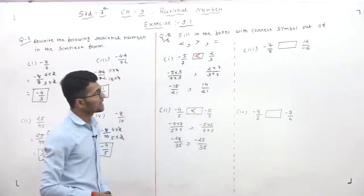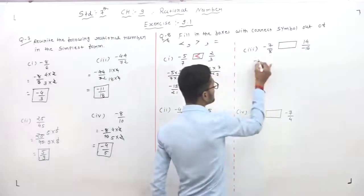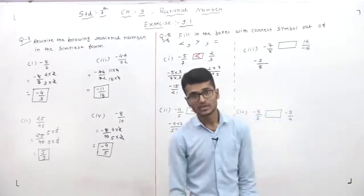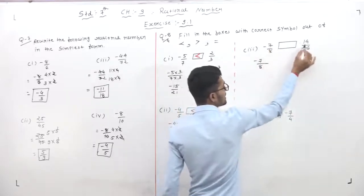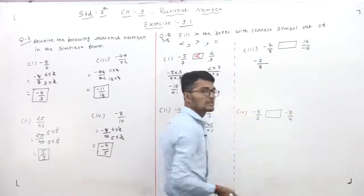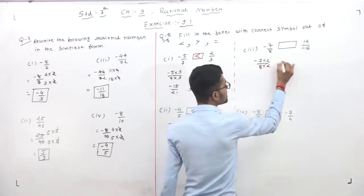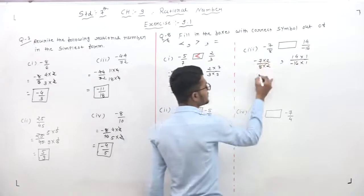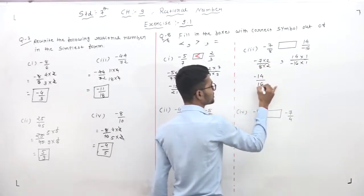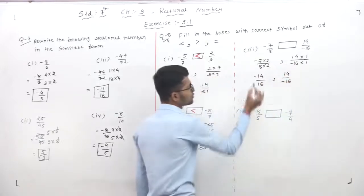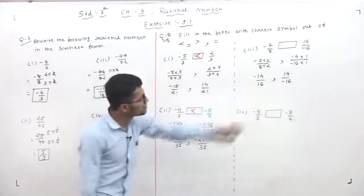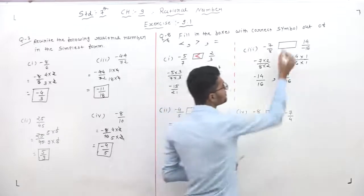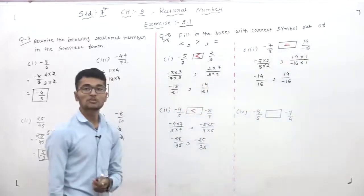Third: minus 7 by 8 and 4 by minus 16. Find the LCM of 8 and 16, which is 16. Multiply minus 7 by 8 by 2 to get minus 14 by 16. The second number, 4 by minus 16, equals minus 4 by 16 — wait, rewriting: minus 7 by 8 becomes minus 14 by 16, and 4 by minus 16 is minus 4 by 16... both carry a negative sign, giving minus 14 by 16 and minus 14 by 16. These two are the same rational number, so we put the equal to sign.